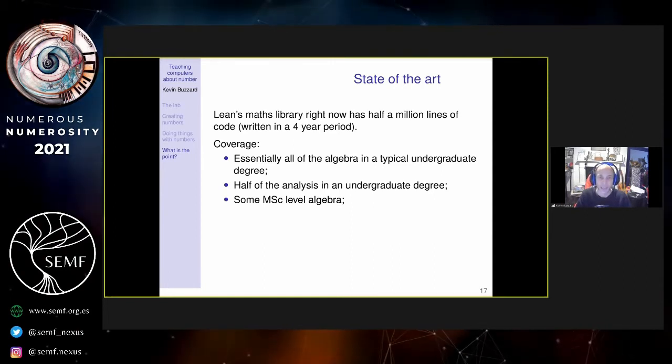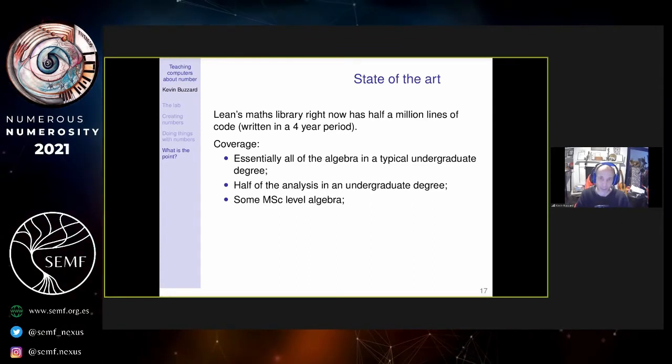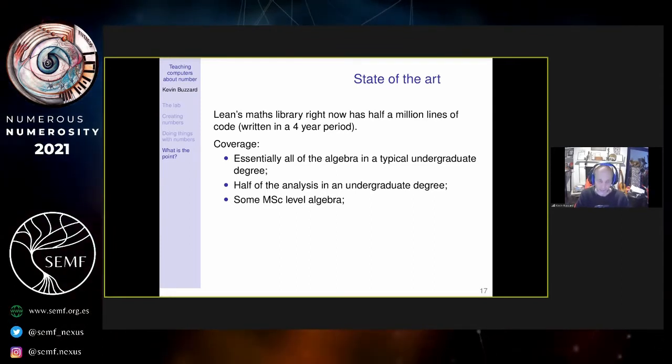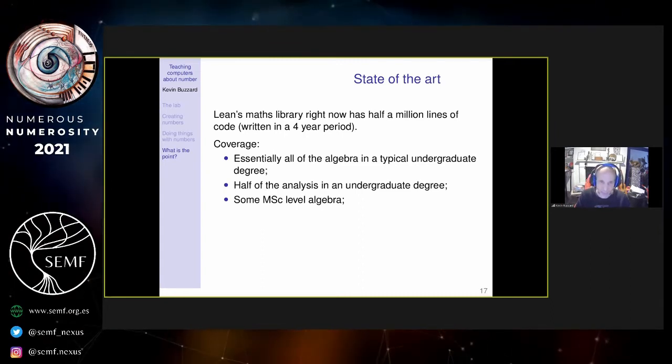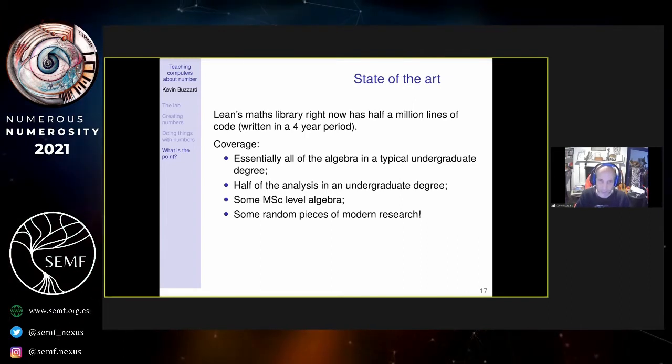We have half the analysis in an undergraduate degree but we have all the algebra. The algebraists, for example, are interested in pushing things much further. We now move to MSC level algebra and much more—we have some modern research level algebra in these systems.